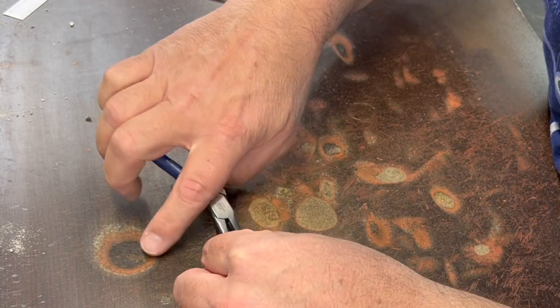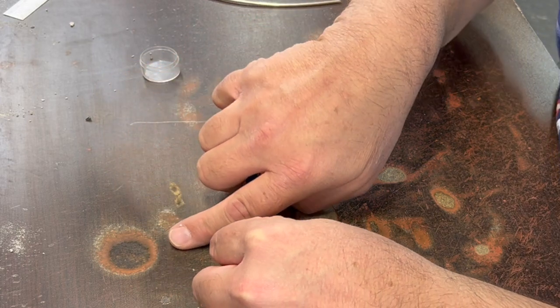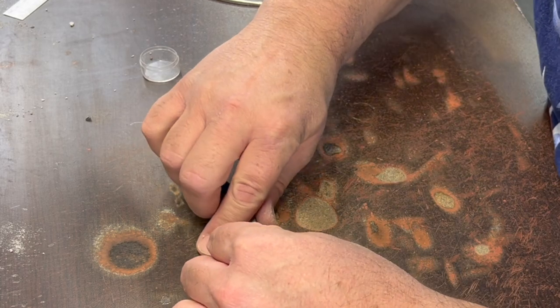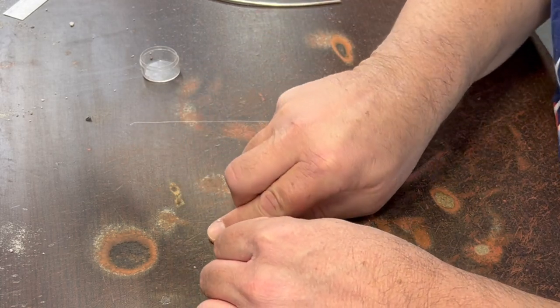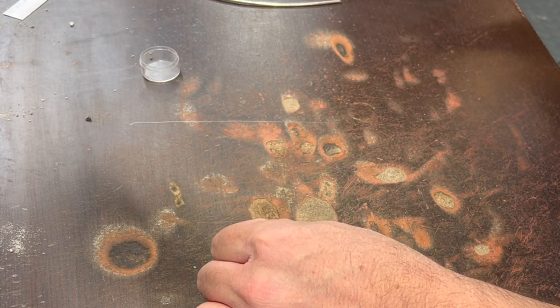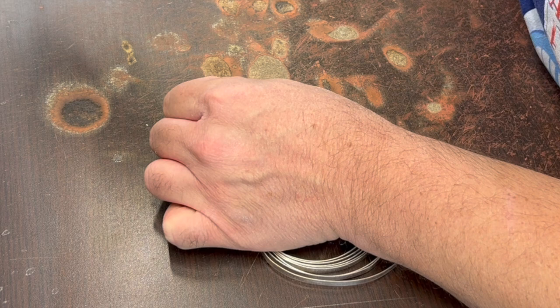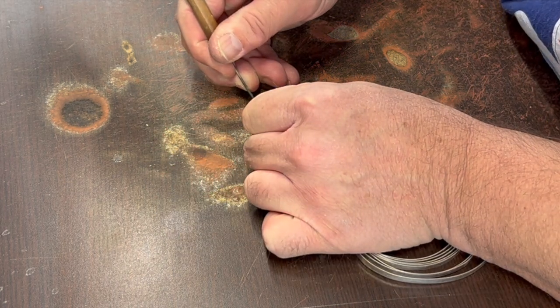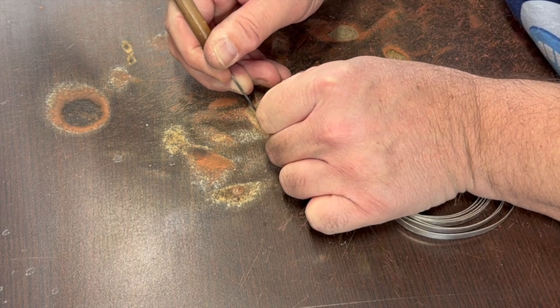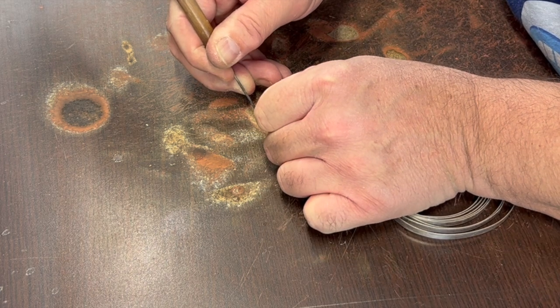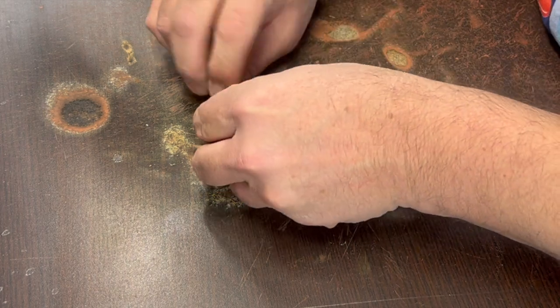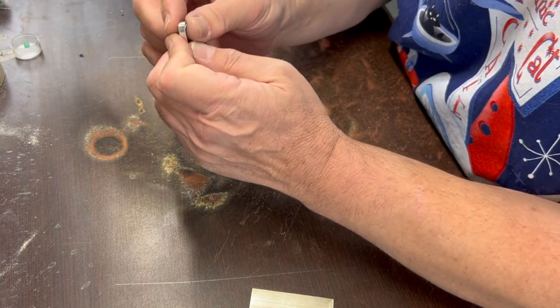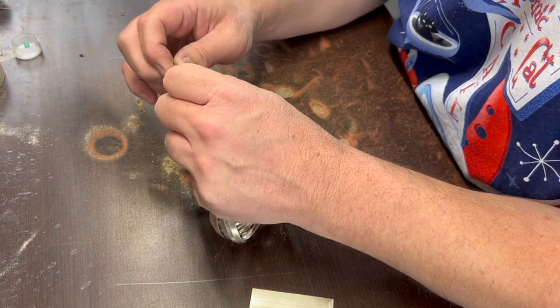I do keep some quarter inch on hand usually because there are occasions where you find a super thick stone that you want to set. It's nice to have something just a little bit taller around. I'm going to measure just a little bit beyond where they cross over, so I have a little room to file. Then I'll cut this off right where I made the scratch.